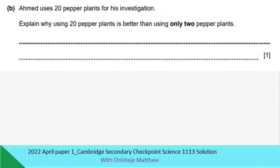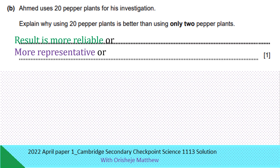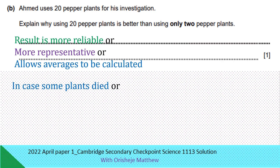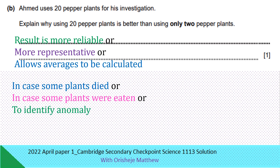Ahmed uses 20 pepper plants for his investigation. Explain why using 20 pepper plants is better than using only 2 pepper plants. The result is more reliable, more representative, and allows an average to be calculated. In case some plants die, you have other ones to collect data from. In case some plants were damaged, you still have other plants for the data. This also helps to identify anomalies in the experiment.